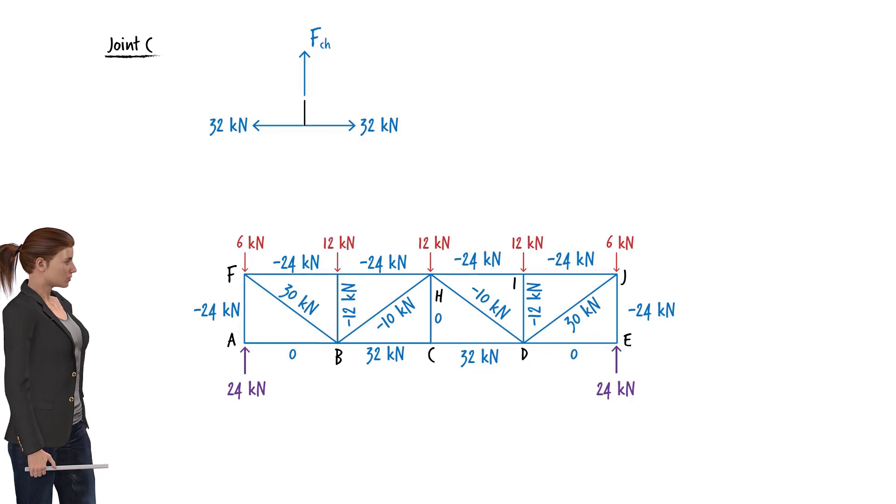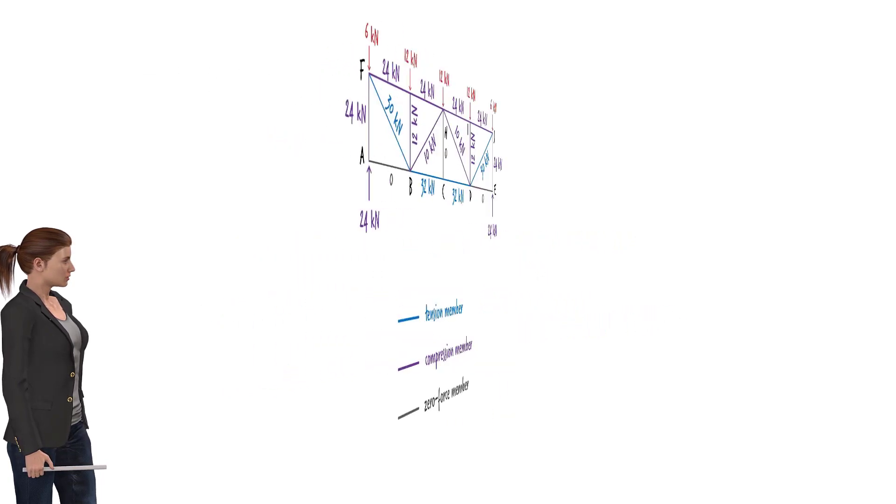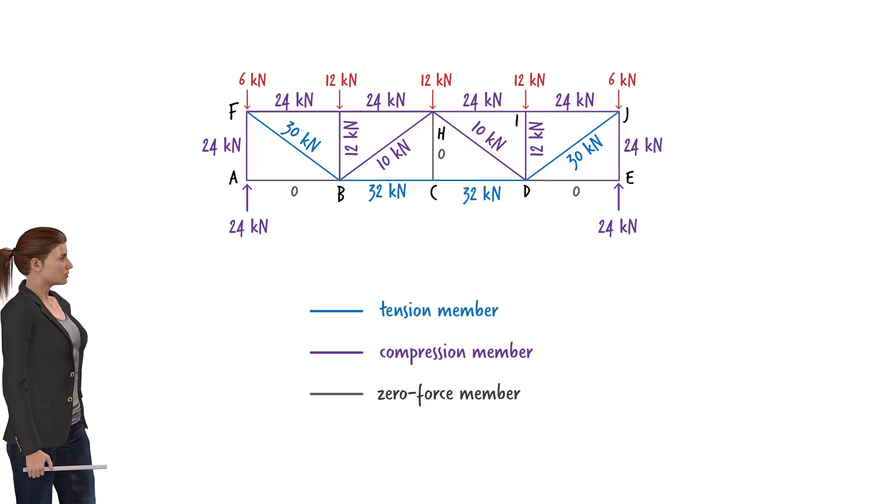To summarize the results, let's show the tensile members in blue, the compressive members in purple, and the zero force members in gray, and write the magnitude of each axial force next to the member.